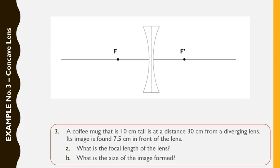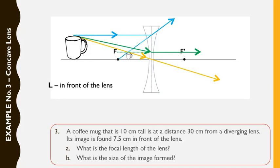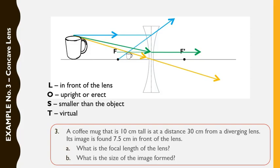Checking the ray diagram: this is the concave or diverging lens, and this is the location of the coffee mug. Ray number 1, ray number 2, and ray number 3 — there is our image, a tiny smaller image of the coffee mug. Location: in front of the lens — the only general location for image formation in a diverging lens. Orientation: upright or erect. Type of image: virtual. Size: smaller than the object.